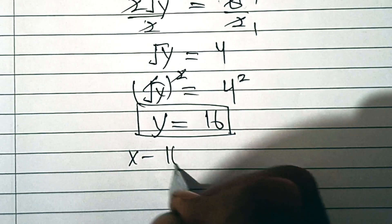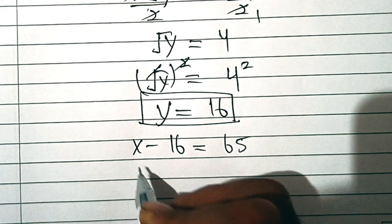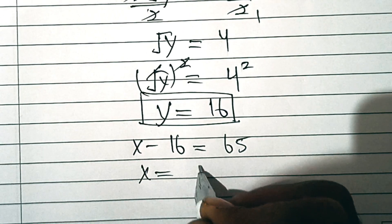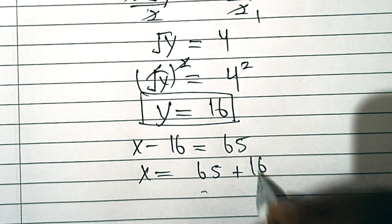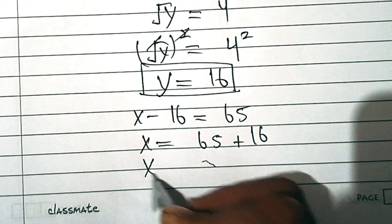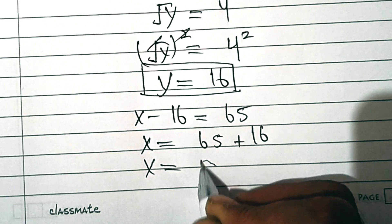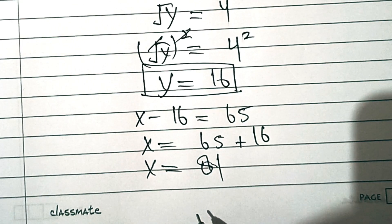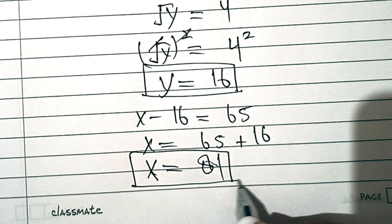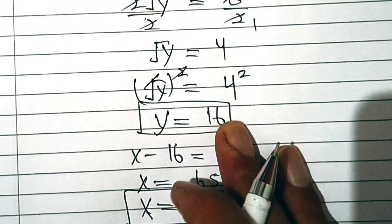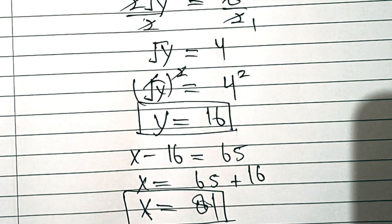We get x − 16 = 65, so x = 65 + 16 = 81. Finally, we have x = 81 and y = 16. Thanks for watching the video.